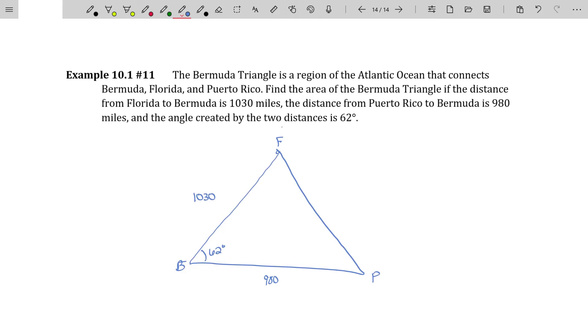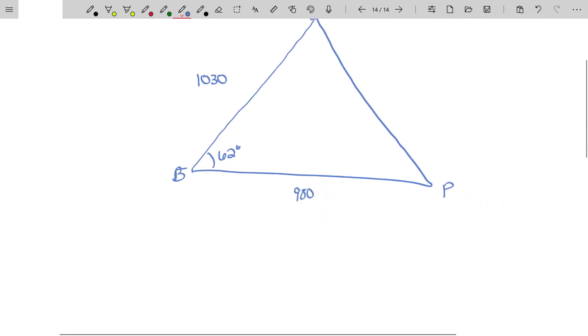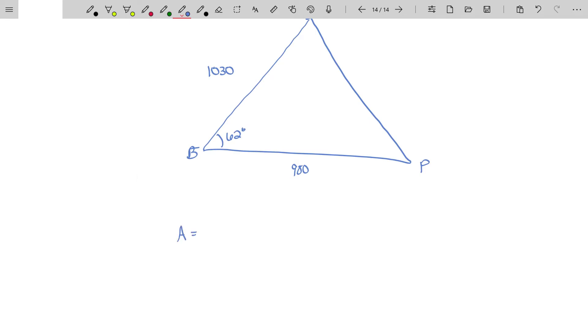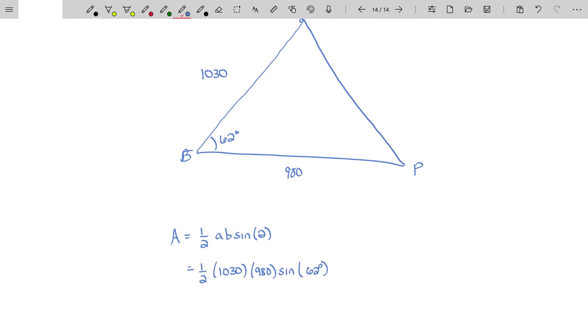So I don't really need to know kind of like if I've laid everything out properly. All I need to know is the distances and the angle in between those two distances. And now I can use my area formula, which is one half AB sine of theta, where A and B are the sides that are containing that angle theta. Theta is the included angle between A and B. So this will be one half, 1,030, 980 sine of 62 degrees. That'll be the area of the Bermuda Triangle. And grabbing a calculator here, I get approximately 445,624 square miles. If it's an area, it'd be miles squared.